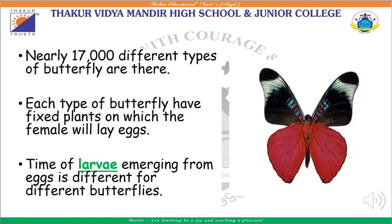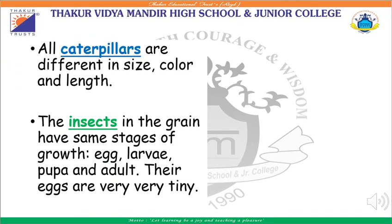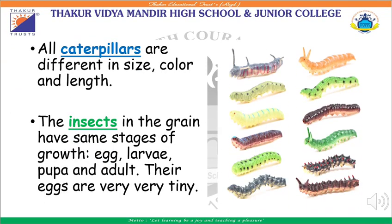The time of larva emerging from the eggs is also different for different butterflies. For different butterflies, their caterpillars are also different in size, color and length. The insects that you see in grains also have the same stages of growth — that is egg, larva, pupa and adult. Their eggs are very very tiny.